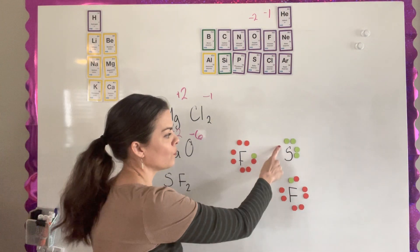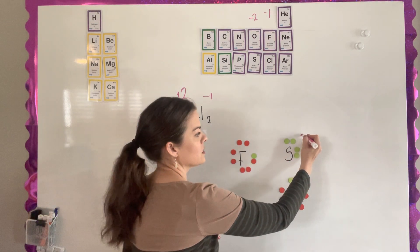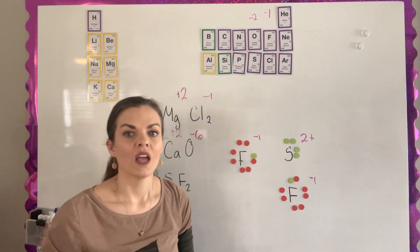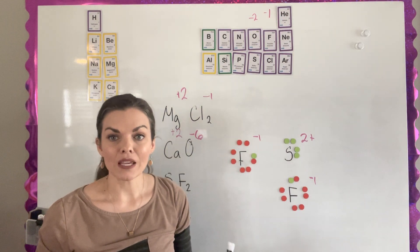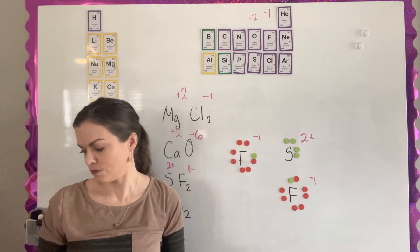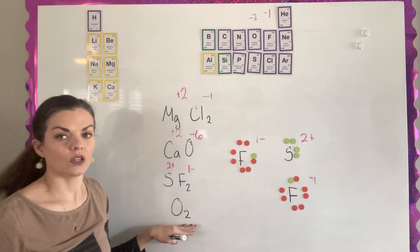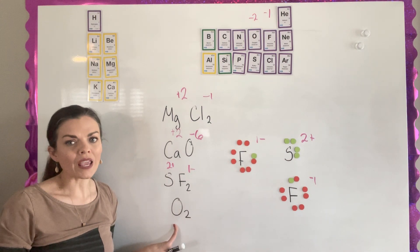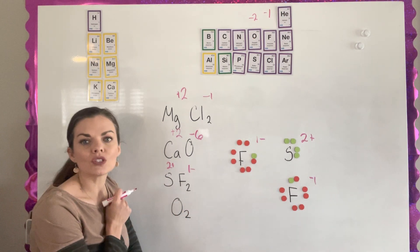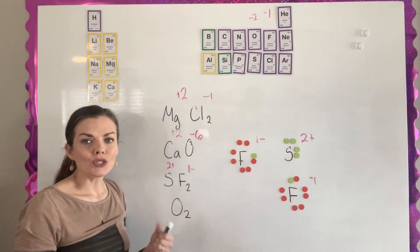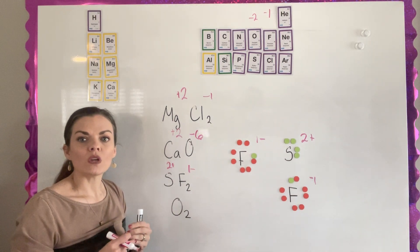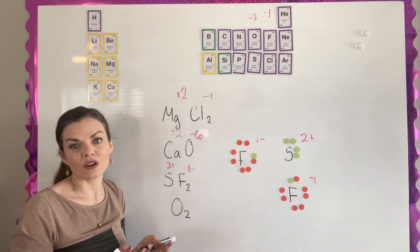When fluorine pulls those electrons, sulfur has lost its two electrons and gets an oxidation state of two plus. Each fluorine has gained an electron, so they each have an oxidation state of negative one — so we put a two plus on sulfur and a one negative on each fluorine. For O2, you should recognize this as a homonuclear diatomic — just two oxygens. With two oxygens it's like a tug of war where both pull equally, so its oxidation state is zero.